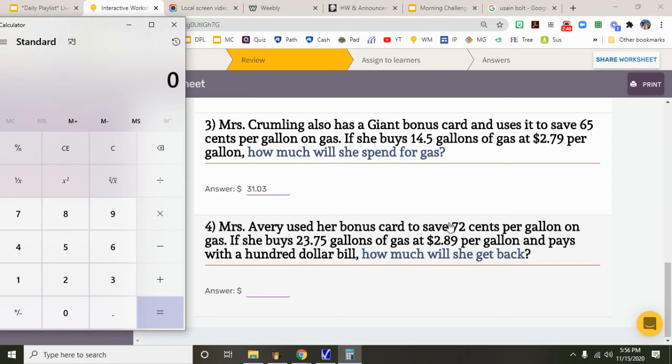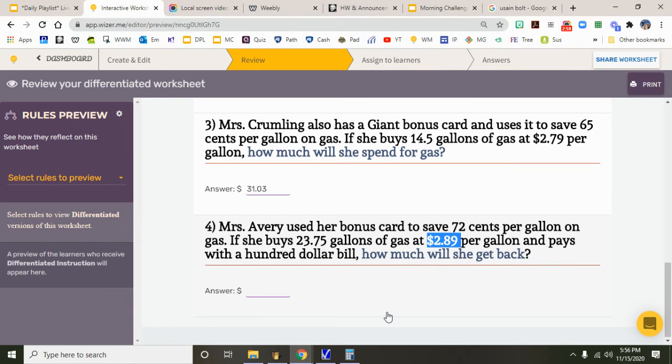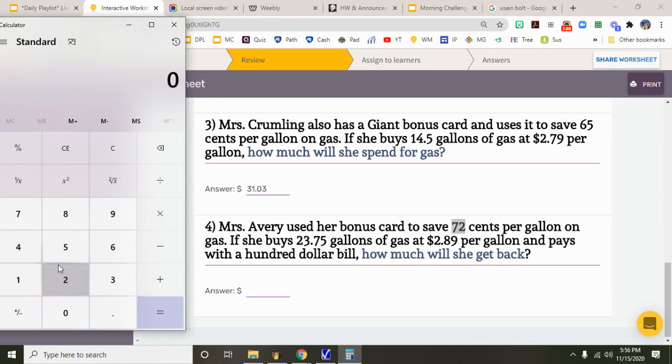Mrs. Avery uses her giant bonus card to save 72 cents per gallon on gas. If she buys 23.75 gallons of gas at $2.89 per gallon and pays with a $100 bill, how much will she get back? Well, again, she pulls into the gas station and it says this on the sign, but she's not going to spend that. She's going to spend 72 cents less per gallon, so the first step is to subtract. $2.89 minus $0.72.